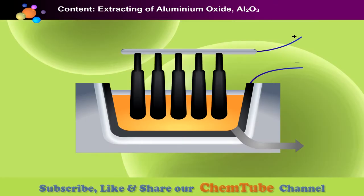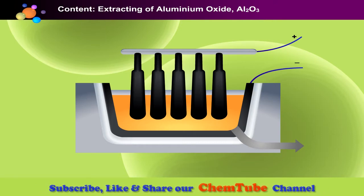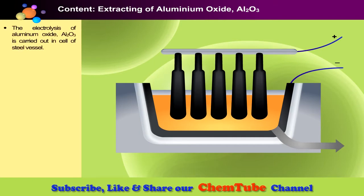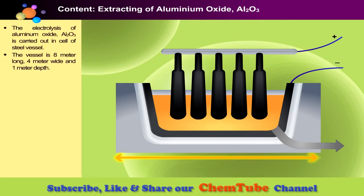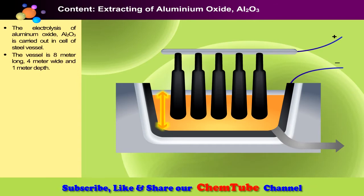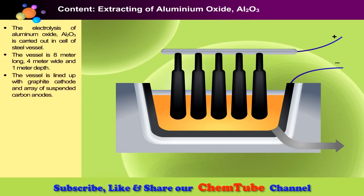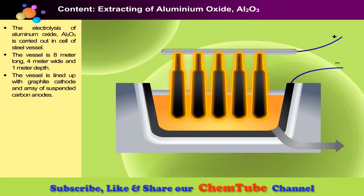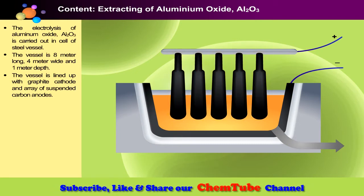Let's take a look at how aluminium is extracted from its ore. First, the electrolysis is carried out in a large steel vessel — up to eight meters long, four meters wide, and about one meter in depth. This vessel is lined with a graphite cathode and an array of suspended carbon anodes.